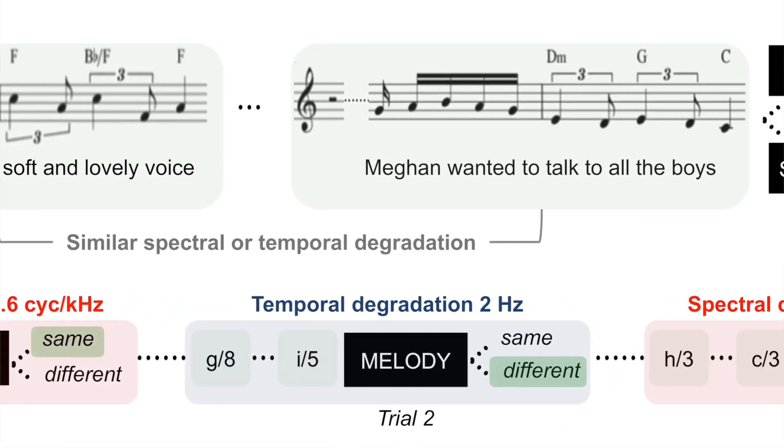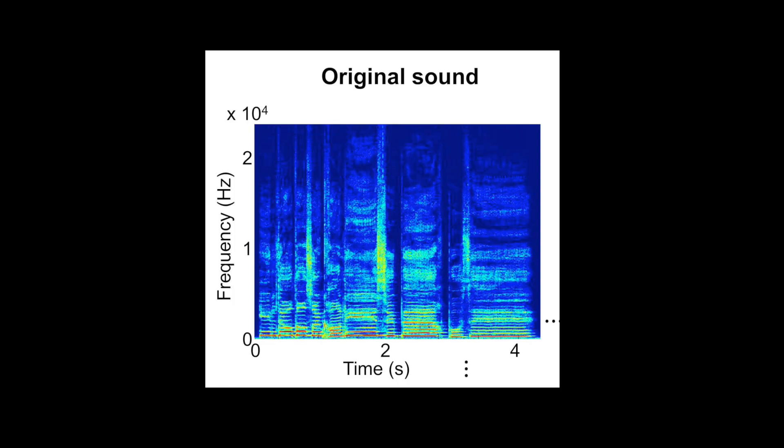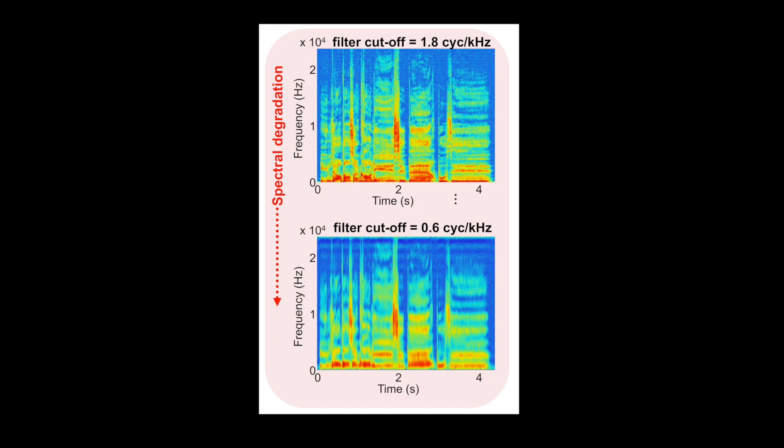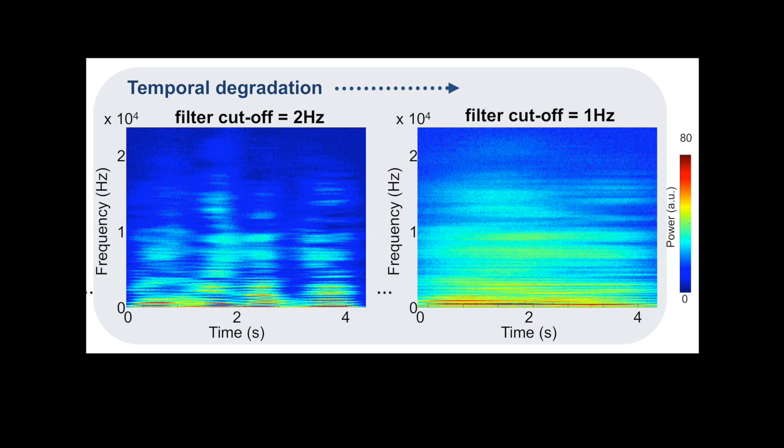We then degraded these songs in either the temporal dimension or the spectral dimension, with the hypothesis that temporal degradations would affect participants' recognition of the sentences, while spectral degradations should affect participants' recognition of the music. Participants were asked to compare pairs of acapella excerpts — they listened to a first excerpt, then a silence, then a second excerpt. After this, they had instructions to focus on either the melody or the sentences. For example, a stimulus sentence would be: 'The people thought a corn was hidden there.'